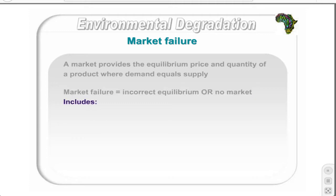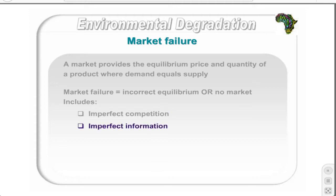Possible causes of market failures include imperfect competition, where firms can set prices or quantities to maximize their profits, and imperfect information, where consumers or producers do not fully know all the information relating to the market. For example, if a consumer knew that a can of cold drink was cheaper at shop A, they would purchase it there rather than at shop B, forcing producers to offer similar quality and prices.